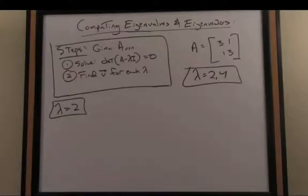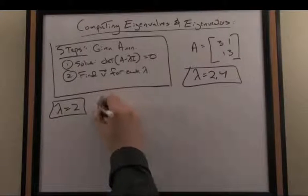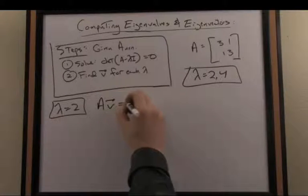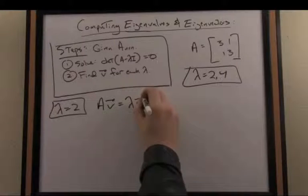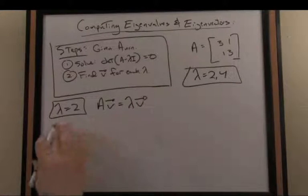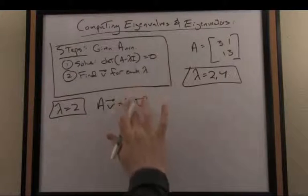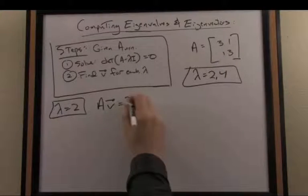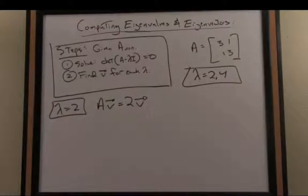So how do I find an eigenvector? You need to remember back in the definition again, it's a non-zero vector satisfying the fundamental identity Av equals lambda v. Now I can safely, in this particular case, plug in 2 for lambda, so I'll replace the lambda here. And I then want to find a vector v satisfying that equation.